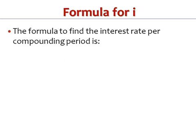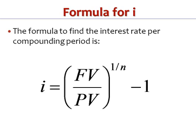The formula that we're going to use is this one here. I is equal to the future value divided by the present value, all multiplied to the power of 1 over n, then we'll take away 1. That's going to give us the interest rate per compounding period.